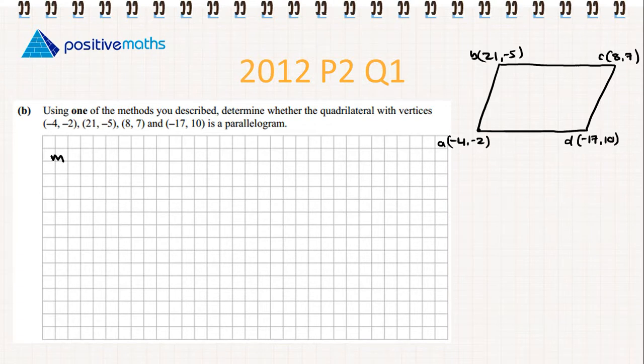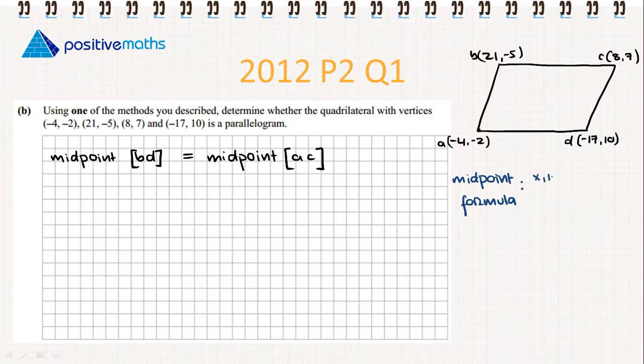We want to find the midpoint of BD and show that it equals the midpoint of AC. I'll write down the midpoint formula: the sum of the x values over 2 comma the sum of the y values over 2.